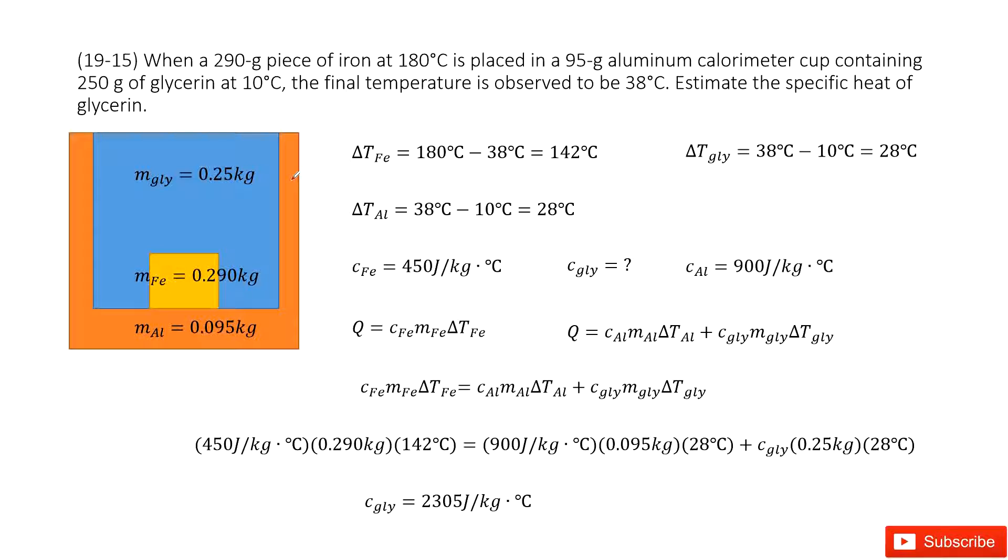We can get the initial heat and final heat and then find it. Now we list the known quantities. First, the mass of this piece of iron is given. We write it as M_Fe. The initial temperature is 180°C, and the final temperature for the system is 38°C. So the temperature change, ΔT_Fe, is 142°C.